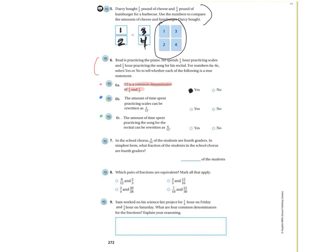For 6b: the amount of time spent practicing scales can be written as 3/12. He spent a quarter of an hour practicing scales. So is 1/4 equal to 3/12? How do I get from 1 to 3? Multiply by 3. And 4 times 3 = 12. Since I can multiply top and bottom by the same number, this is absolutely an equivalent fraction.